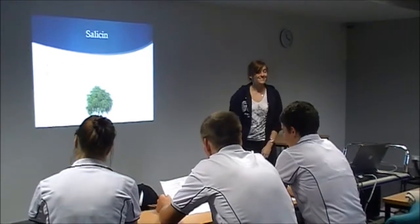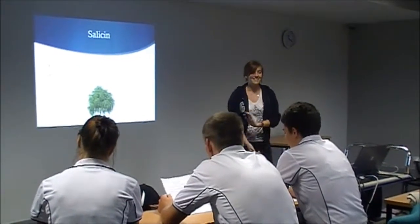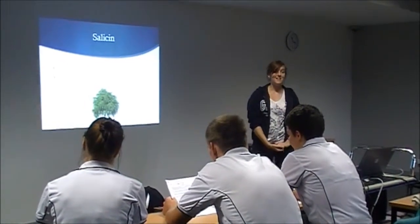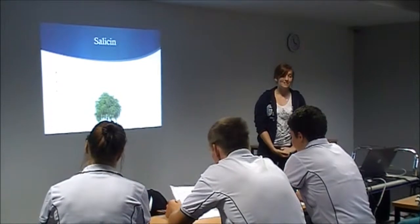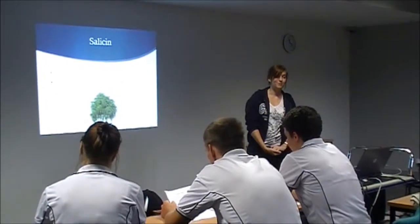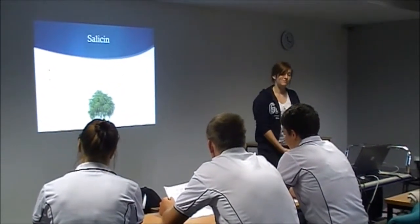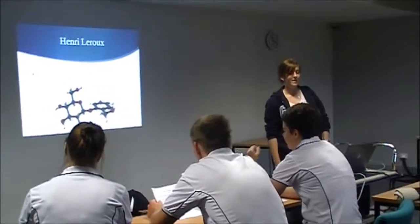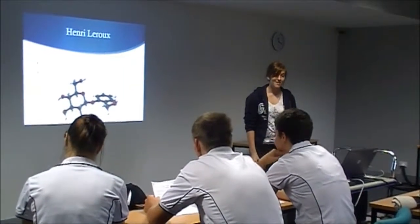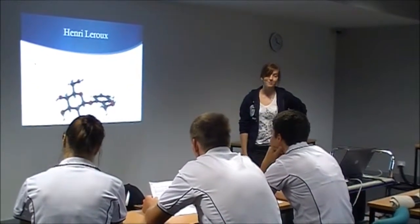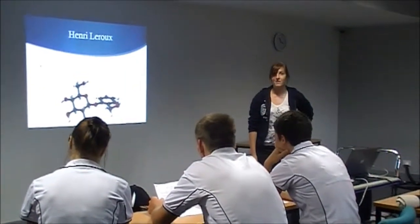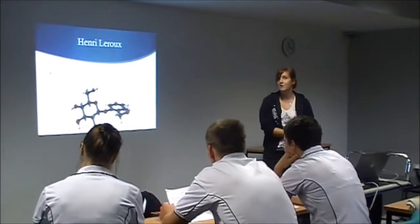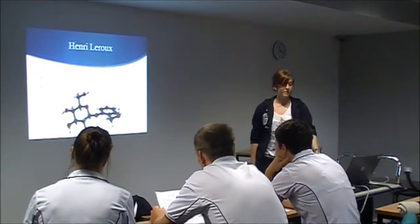In 1828 AD, a professor at Munich University isolated a yellow needle-like crystal from bark called salicin. In 1829, a French scientist named Henri LaRue developed a technique that could extract 30 grams of salicin from 1.5 kilograms of bark.